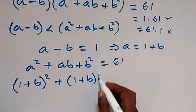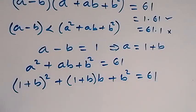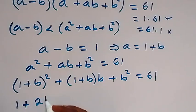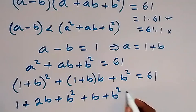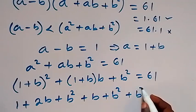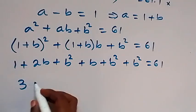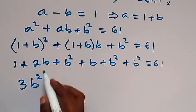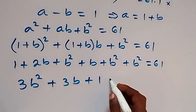Expanding: (1 + b)² = 1 + 2b + b²; (1 + b)·b = b + b²; plus b². Collecting terms: b² + b² + b² gives 3b², and 2b + b gives 3b, plus 1, equals 61. Rearranging: 3b² + 3b + 1 - 61 = 0.